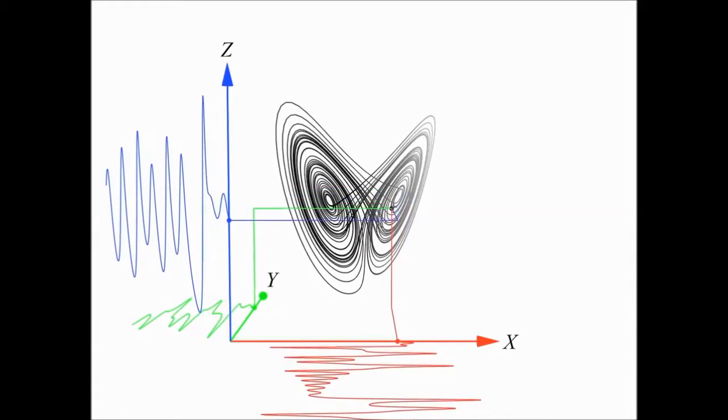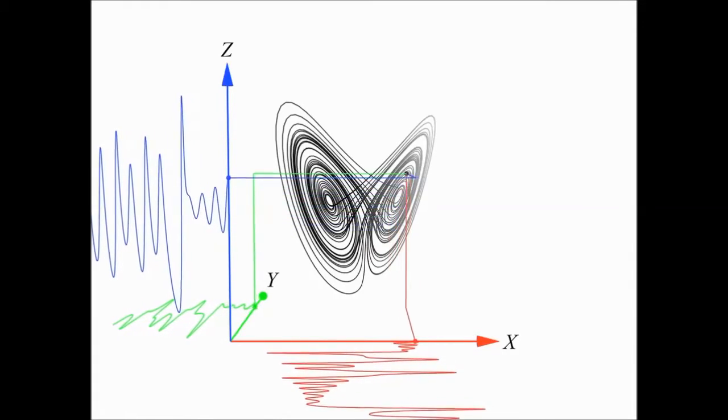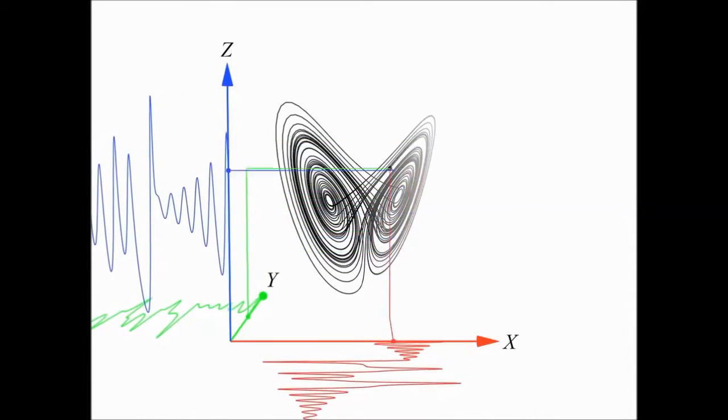Conversely, we can recreate the manifold by projecting the individual time series simultaneously back into the state space to create the flow.